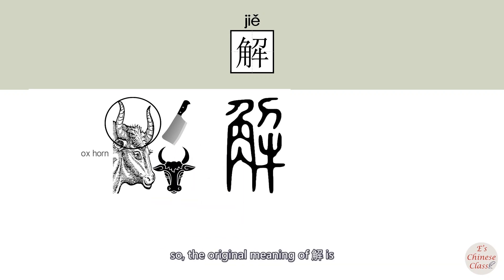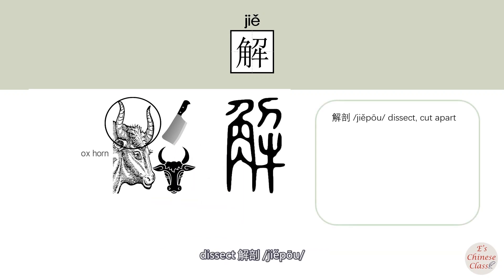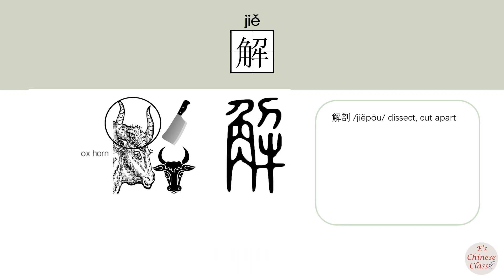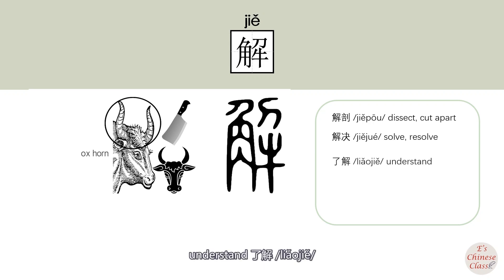So the original meaning of 解 is 解剖 (to dissect/anatomy). The extended meanings include 解决 (to solve/resolve) and understand — 了解.